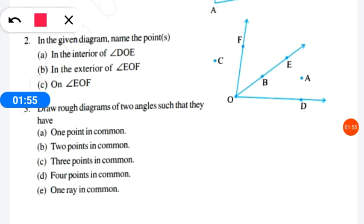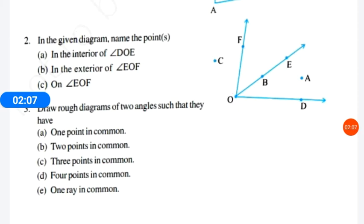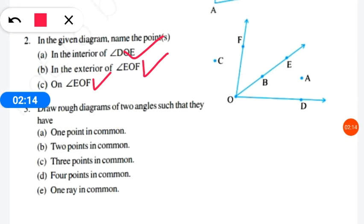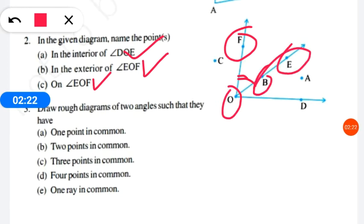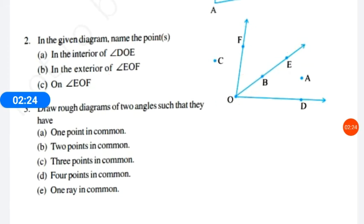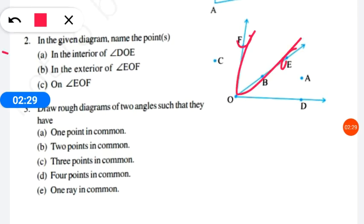Question number C is: which points are on angle EOF? 'On' means on the line itself. I already explained interior and exterior; now we find which points are used to form the angle. The points on angle EOF are point F, point O, point B, and point E. So question number 2 is complete.